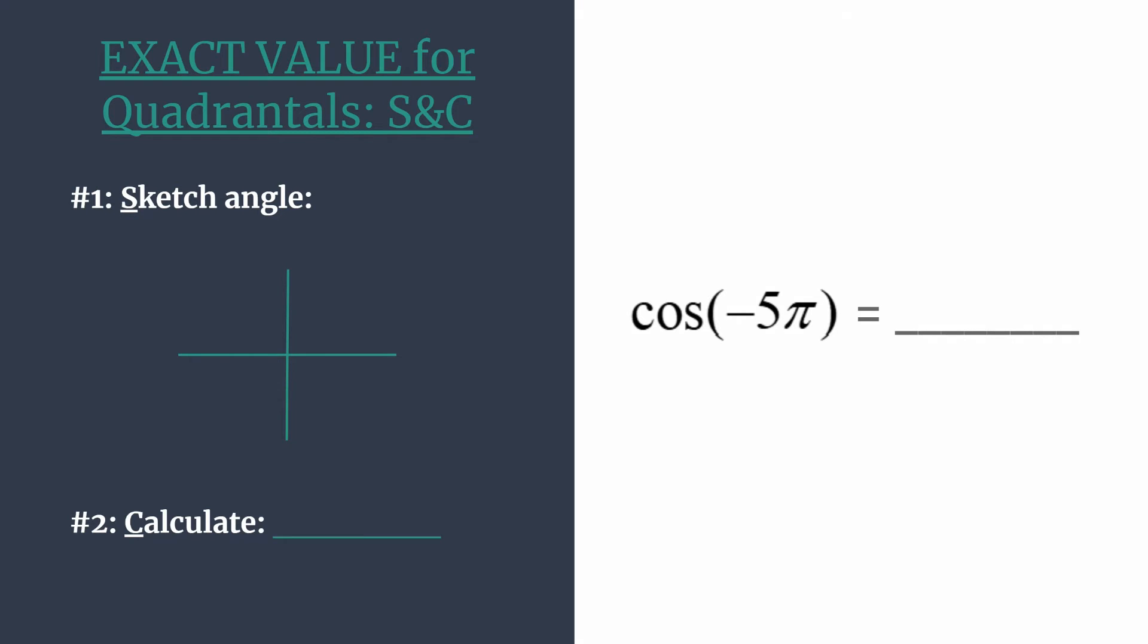So two things to notice about our angle: it's negative, which means we're rotating in the clockwise direction, and the second thing is that it's more than one clockwise rotation because one clockwise rotation would be negative 2π.